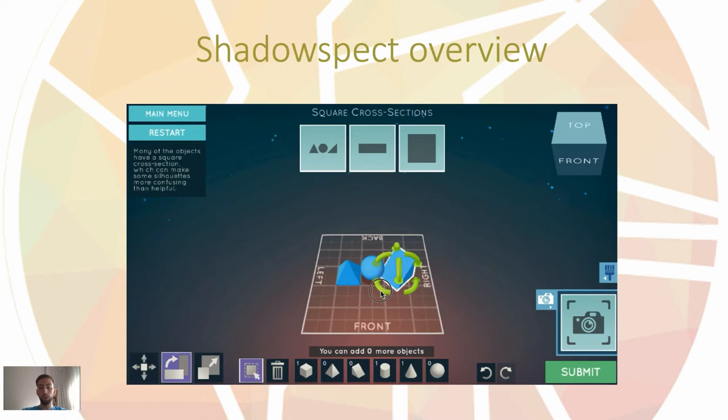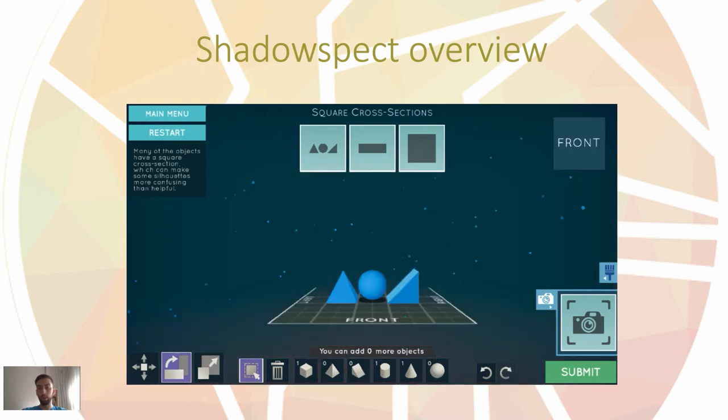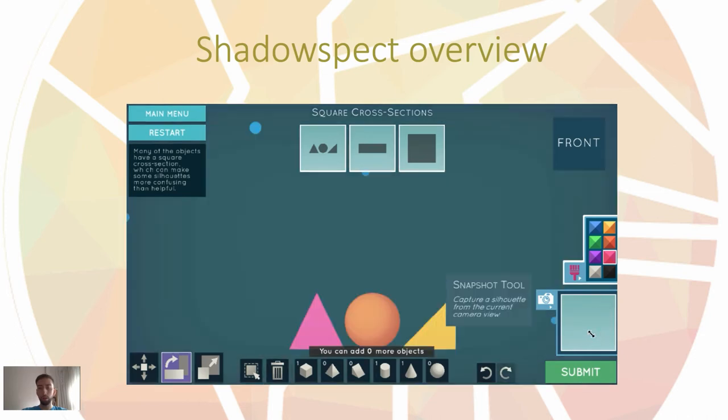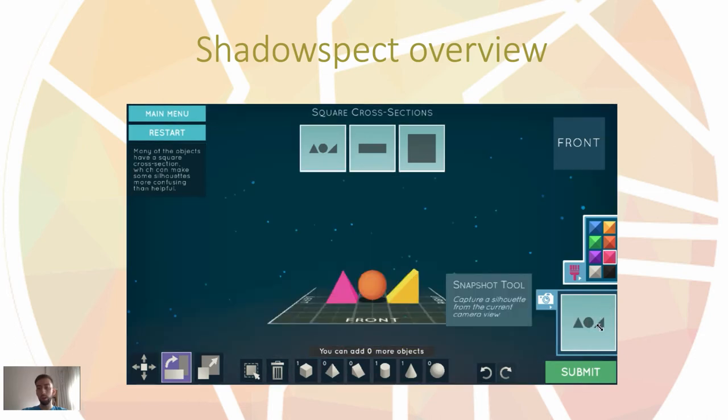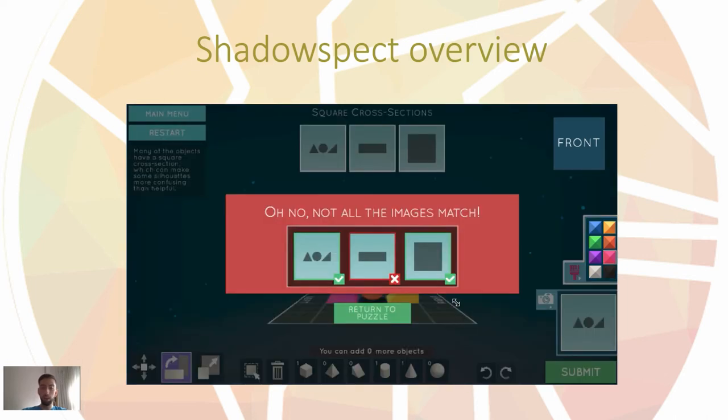We can also scale the shape, change the perspective on the scenario, and paint the shapes to make them more visual. We can also take snapshots to see if the silhouette matches the objective one. And finally, we can submit the puzzle to see if the solution is correct.